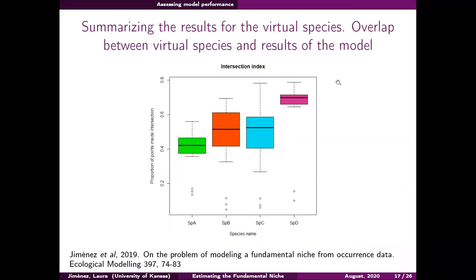In summary, there were very good cases in which we recovered up to 75 percent of the fundamental niche, and in the worst case it was around 40 percent. The lesson from applying this method with virtual species is that it is probably not enough to incorporate only information from physiological experiments. The shape of existing environmental combinations in environmental space seems to heavily affect the estimations of the niche.